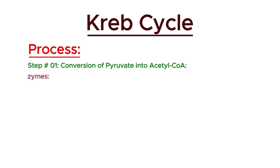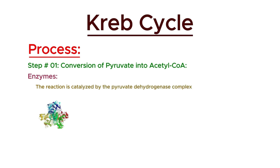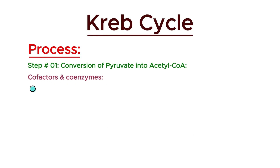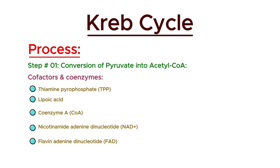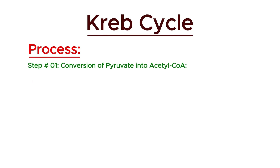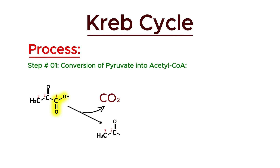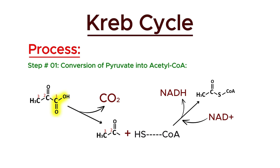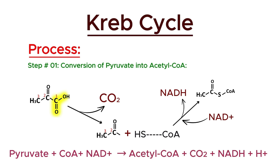This reaction is catalyzed by the pyruvate dehydrogenase complex, a large multi-enzyme complex. Several cofactors and coenzymes are required for the pyruvate dehydrogenase complex to function properly. During this process, pyruvate loses one carbon as carbon dioxide, CO2. The remaining two-carbon acetyl group is then transferred to coenzyme A to form acetyl-CoA. This reaction also produces NADH from NAD+. The overall reaction can be summarized as: pyruvate + CoA + NAD+ yields acetyl-CoA, carbon dioxide, NADH, and a hydrogen ion.